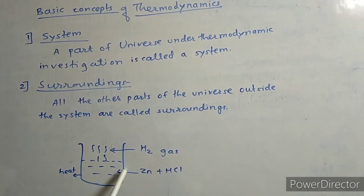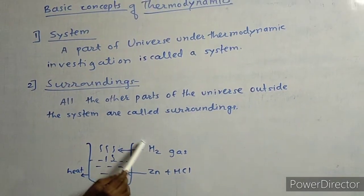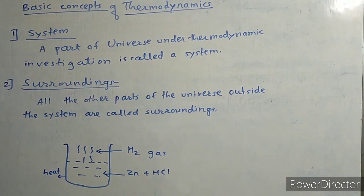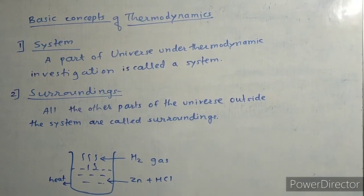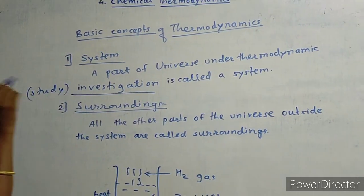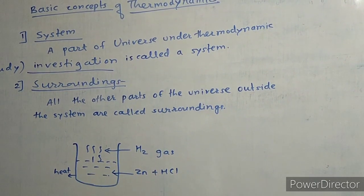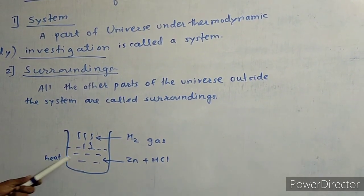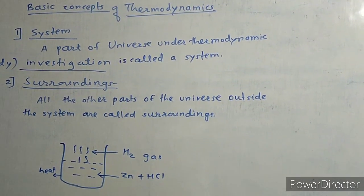The part above and around the system — whatever remaining part of the universe outside the system — is called the surroundings. So the system is the part of the universe under thermodynamic study, and the surroundings is everything else outside the system.